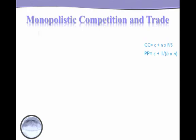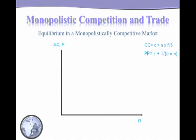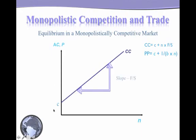Let's draw these two equations on the same graph — wherever they intersect gives us the market equilibrium. On the x-axis we measure number of firms and on the y-axis we measure average cost and price. Drawing the CC function first: the intercept is the marginal cost c, and the slope is F/s, so it is of the form y equals a plus bx where y is average cost. The PP function has the same marginal cost as intercept but it is a different relationship.